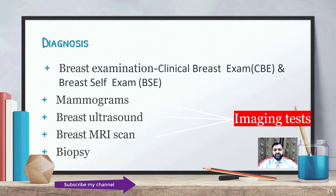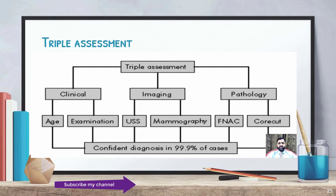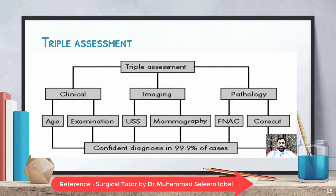Diagnosis involves clinical breast examination, breast self-examination, mammograms, breast ultrasound, breast MRI scan, and biopsy. Triple assessment includes clinical assessment, assessment by imaging, and pathological assessment — by which diagnosis can be made in 99.9% of cases. Clinical assessment involves taking a brief history and performing clinical examination. Imaging includes breast ultrasonogram and mammography. Pathological diagnosis can be confirmed through fine needle aspiration cytology and core cut biopsy.